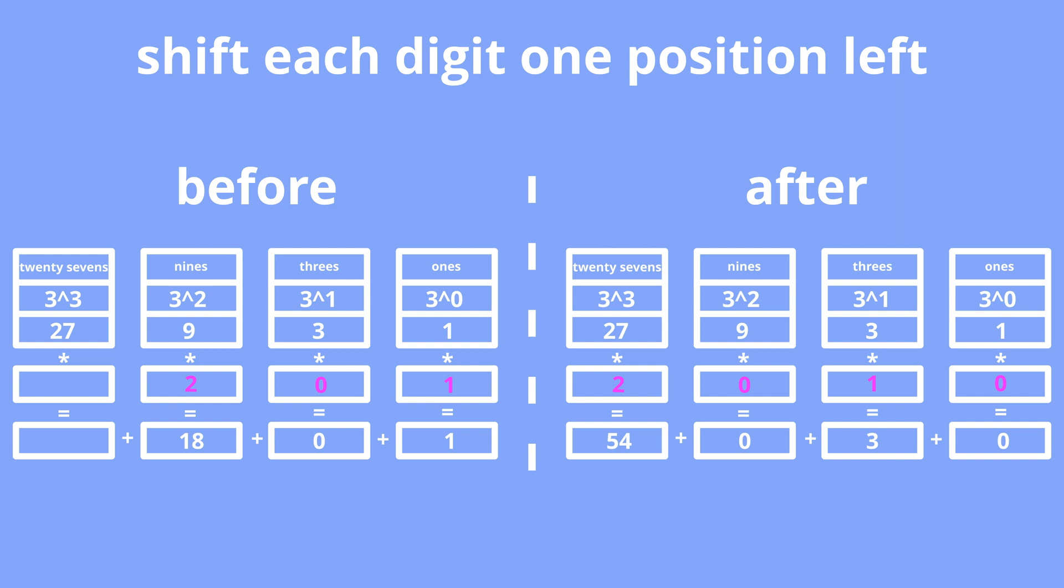But after the shifting, digit 2 is in the 27s position and represents 54, which is 3 times more than previously. The same story for other digits. After the shifting, each starts to represent 3 times more. If each part is 3 times greater, the whole is also 3 times greater. Please look attentively at the calculations. I hope everything is clear.